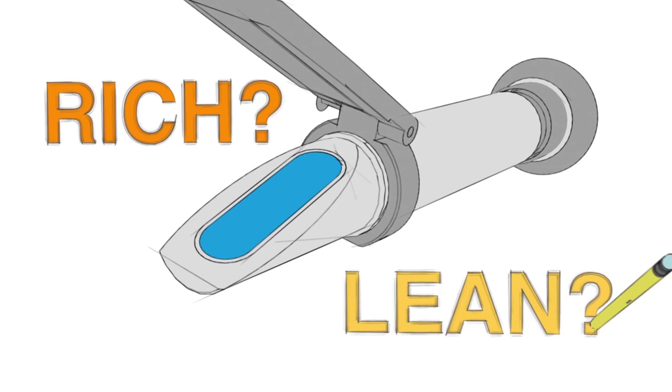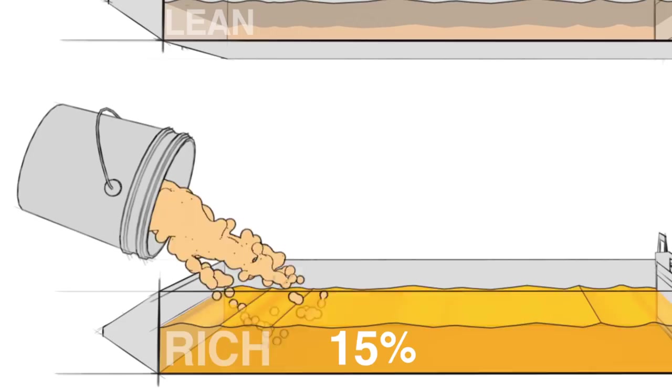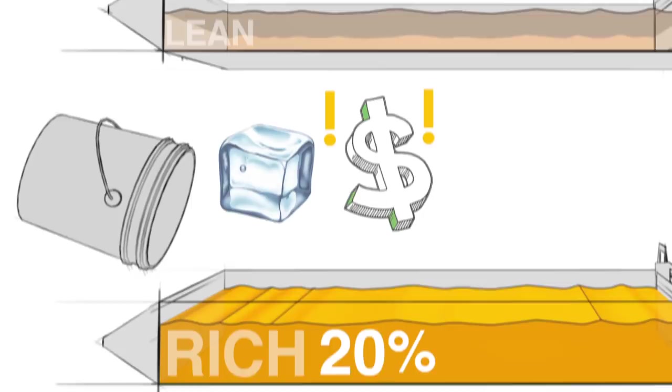If it's rich and you add more concentrate, you will simultaneously reduce cooling capacity and throw money away. If it's lean and you don't add enough concentrate, then you risk short tool life, bad surface finishes, and rusting your machine and parts.